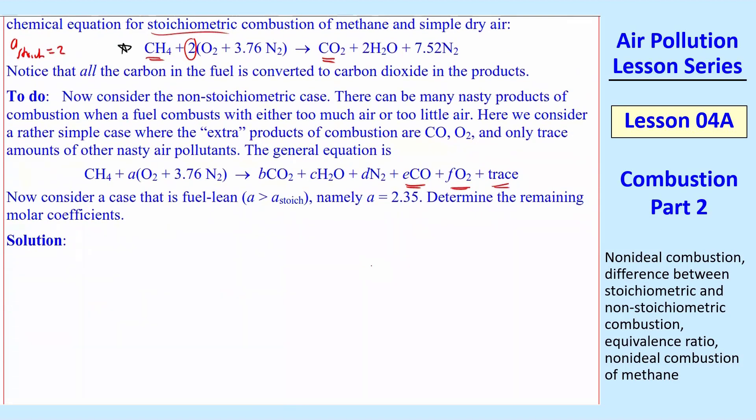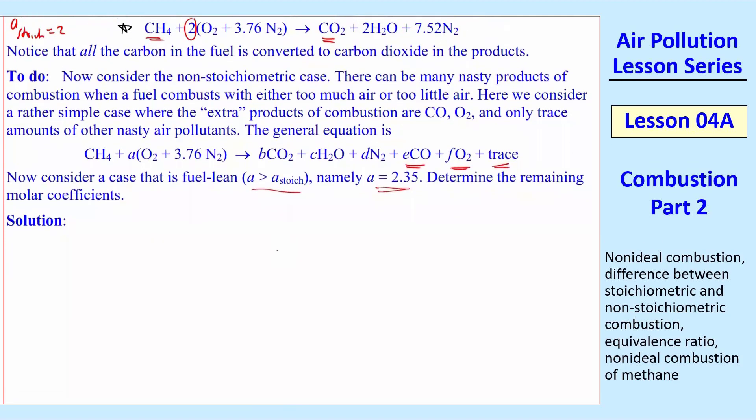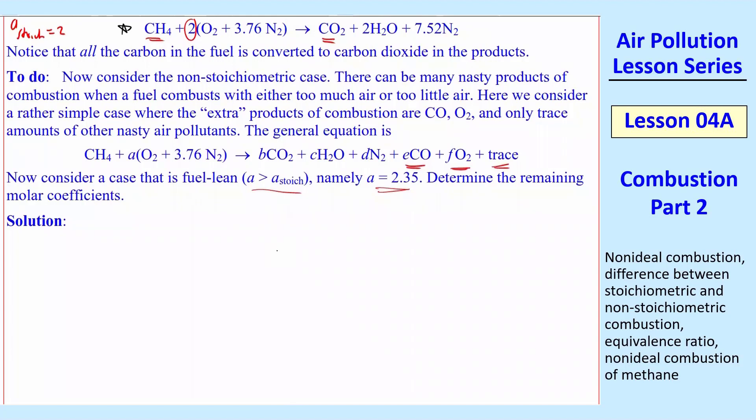So let's consider a fuel lean. In other words, there's too much oxygen. So A is greater than A stoic. A stoic was 2. So let's just pick out of the hat A equal 2.35 and then determine the remaining molar coefficients. So you know how to do this in any chemical equation by balancing each element. So let me just write the equations. First, we take the carbon.